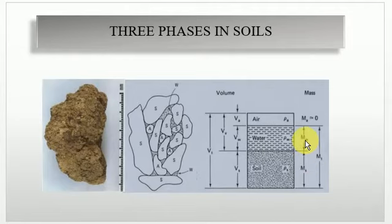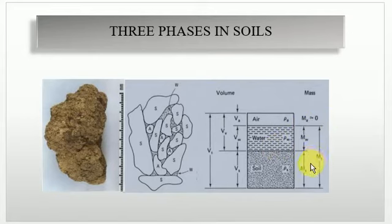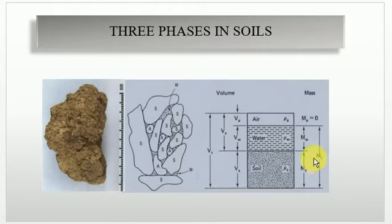Similarly, the mass of air is going to be zero. Therefore ms and mw together are considered as the total mass — mass of soil and mass of water — because ma is equal to zero.